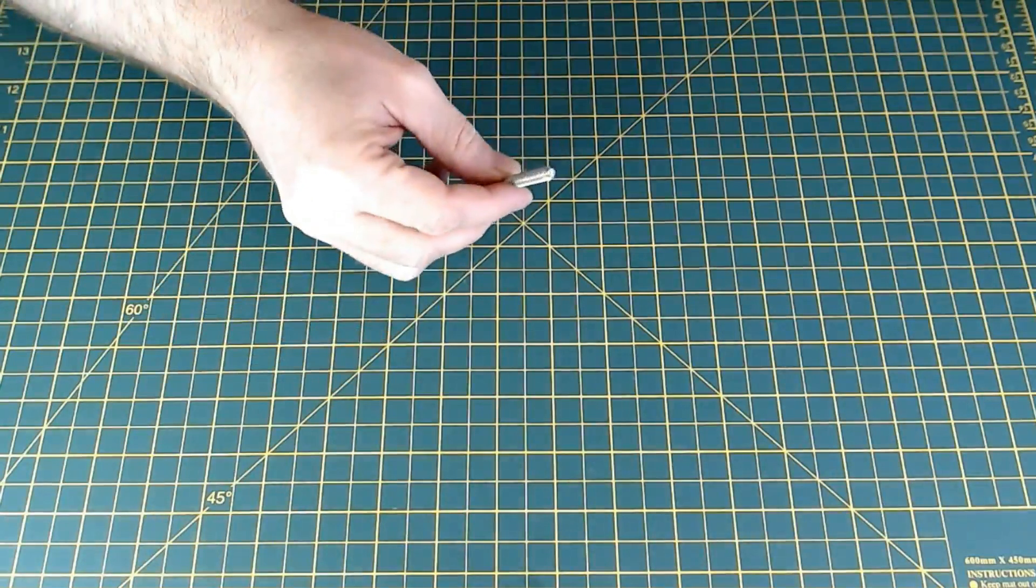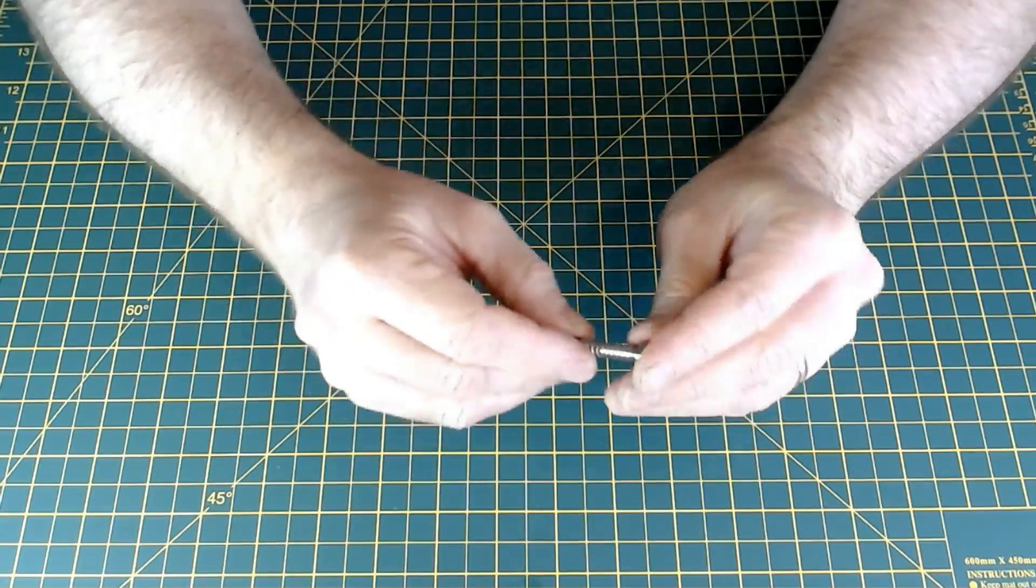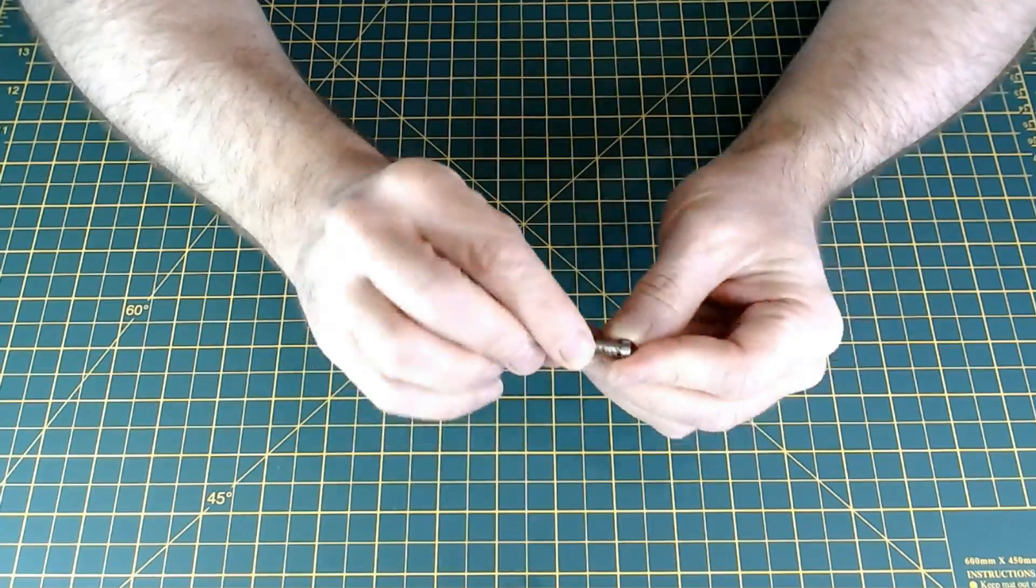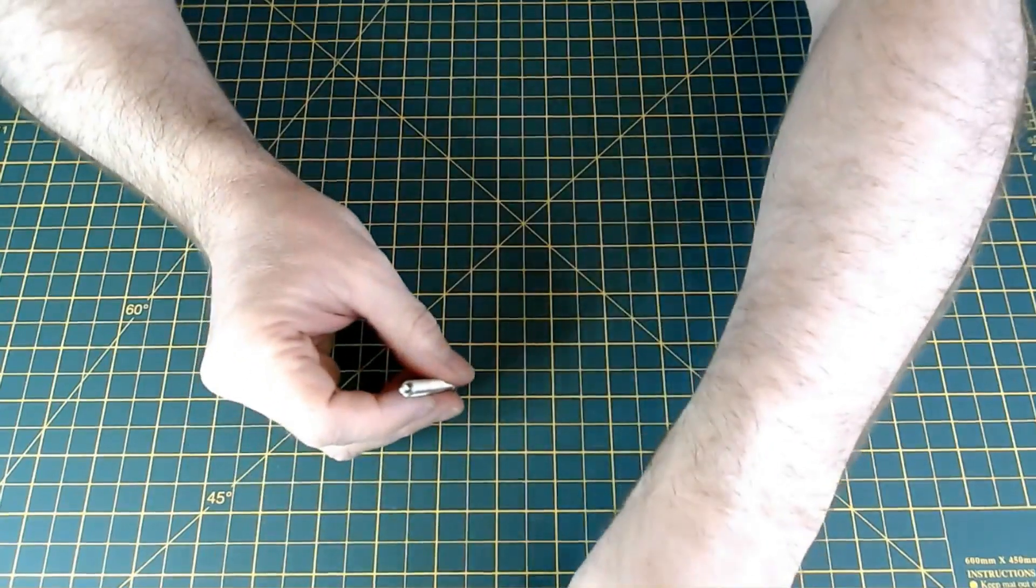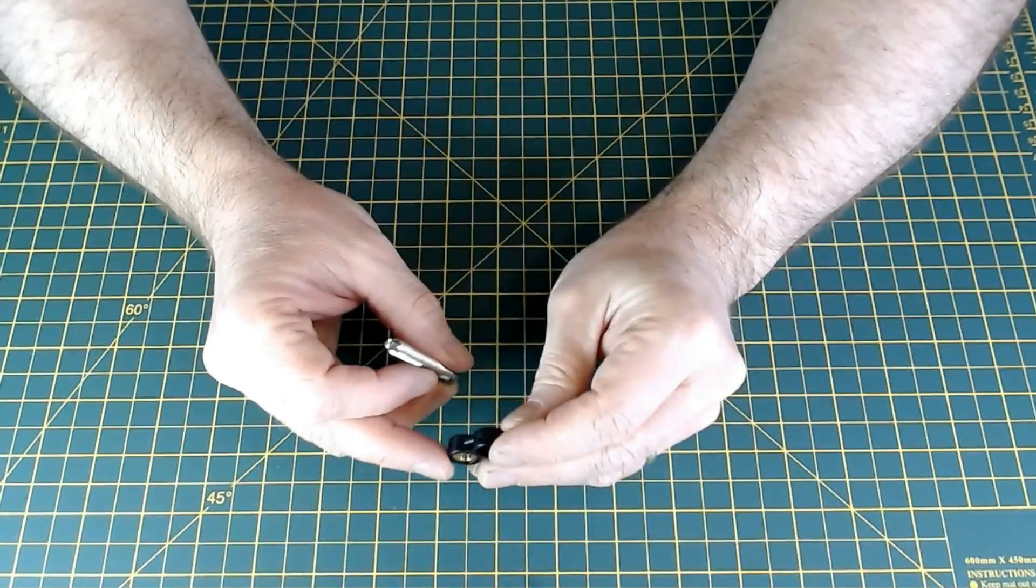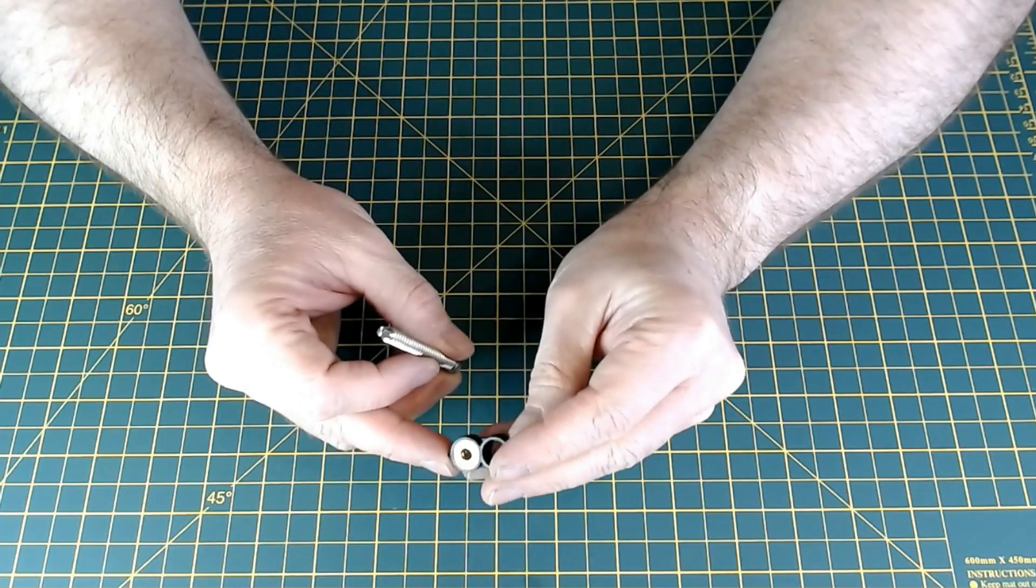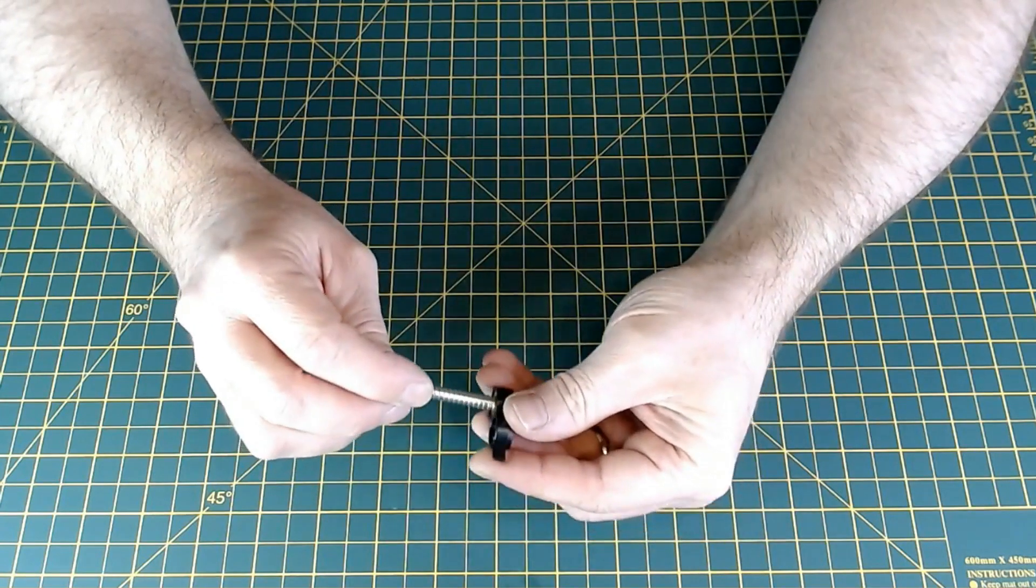First things first, as always for these things, we fit the bearing onto the steel rod. It just kind of fits on, and then bring the base thing over and screw that in.